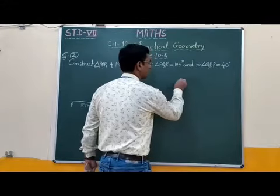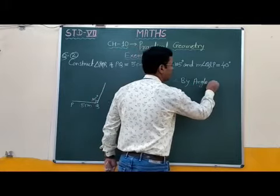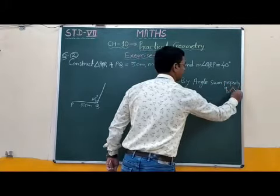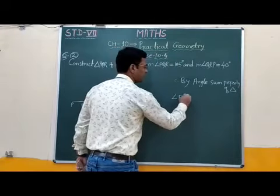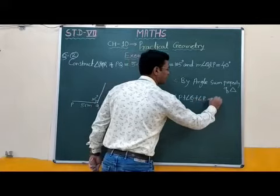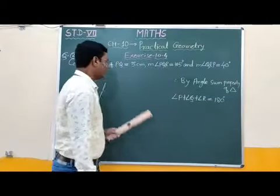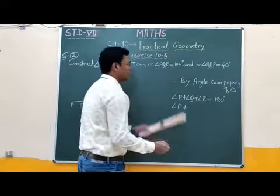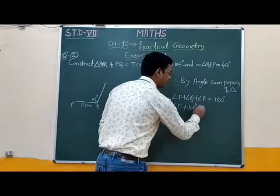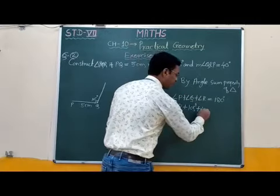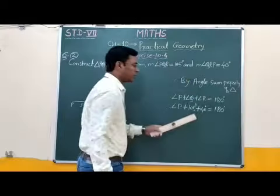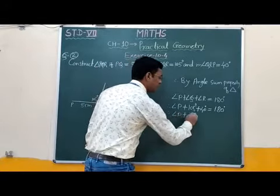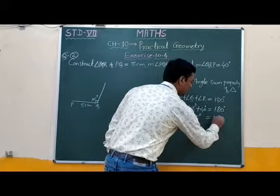By angle sum property of triangle: angle P plus angle Q plus angle R is equal to 180 degrees. Here angle P we have to find out. Angle Q is 105 degrees and angle R is 40 degrees. Now, 105 plus 40 is equal to 145 degrees. Therefore, angle P plus 145 degrees is equal to 180 degrees.